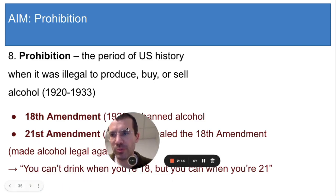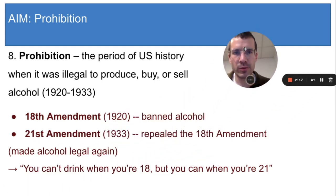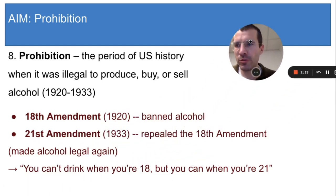Prohibition began with the 18th Amendment and it ended with the 21st Amendment. The 21st Amendment repealed, or canceled, the 18th Amendment, and in 1933 alcohol became legal again. That means that throughout all of the 1920s, alcohol was illegal.